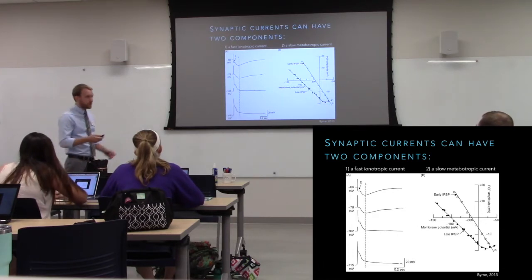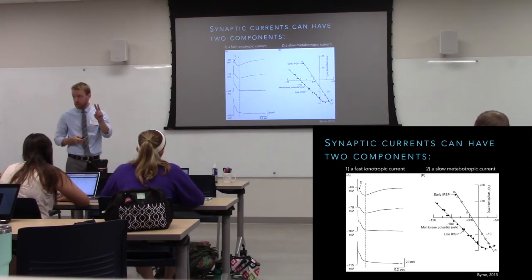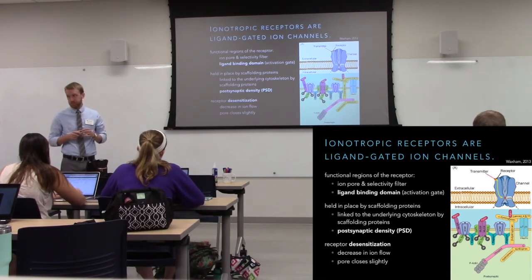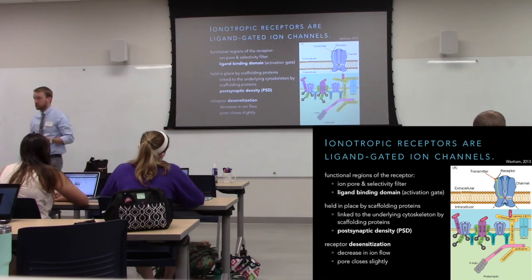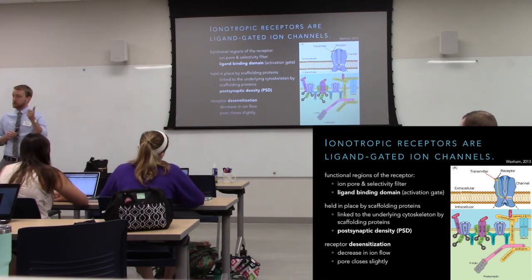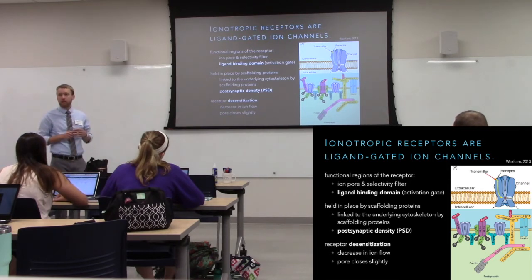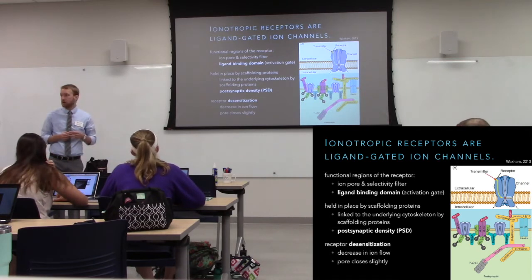With synaptic transmission we have two different time courses because we have two different types of receptors. That fast component is driven by ionotropic receptors. They're pretty simple — just ion channels with an ion pore, a selectivity filter to make them either excitatory or inhibitory, and a ligand binding site somewhere outside the cell.